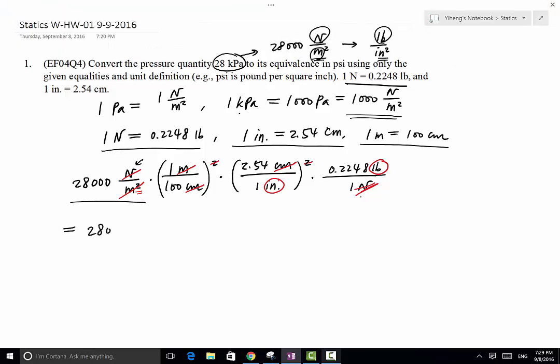So we collect all the numbers, 28,000 times 1 over 100 squared times 2.54 squared times 0.2248. So that's collecting all the numbers, and then we just attach the remaining unit to it, which is pound per inch squared.